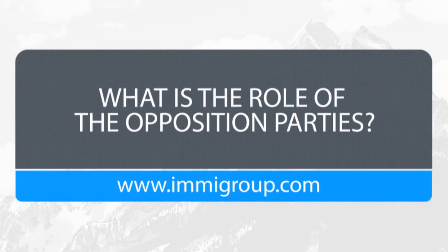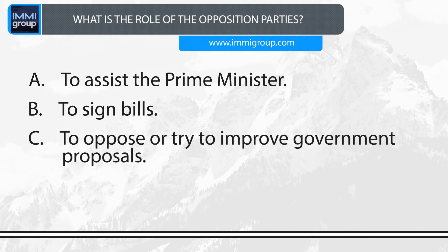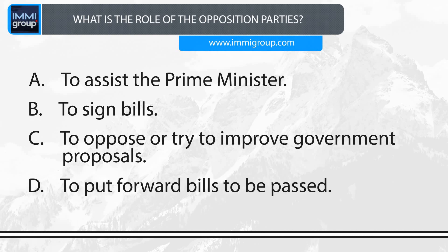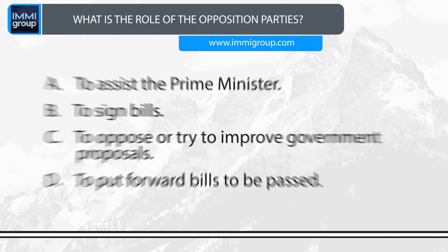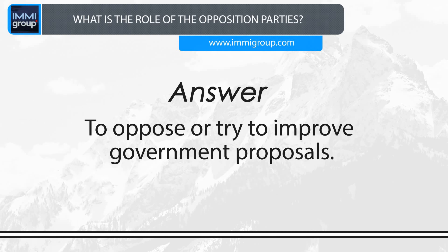What is the role of the opposition parties? A. To assist the Prime Minister. B. To sign bills. C. To oppose or try to improve government proposals. D. To put forward bills to be passed. Answer: To oppose or try to improve government proposals.